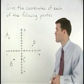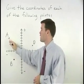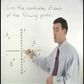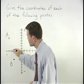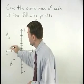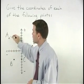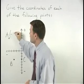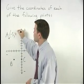So to find the coordinates for point A, we start at the origin and we move 5 units to the left and 4 units up. So that's the point negative 5, 4.